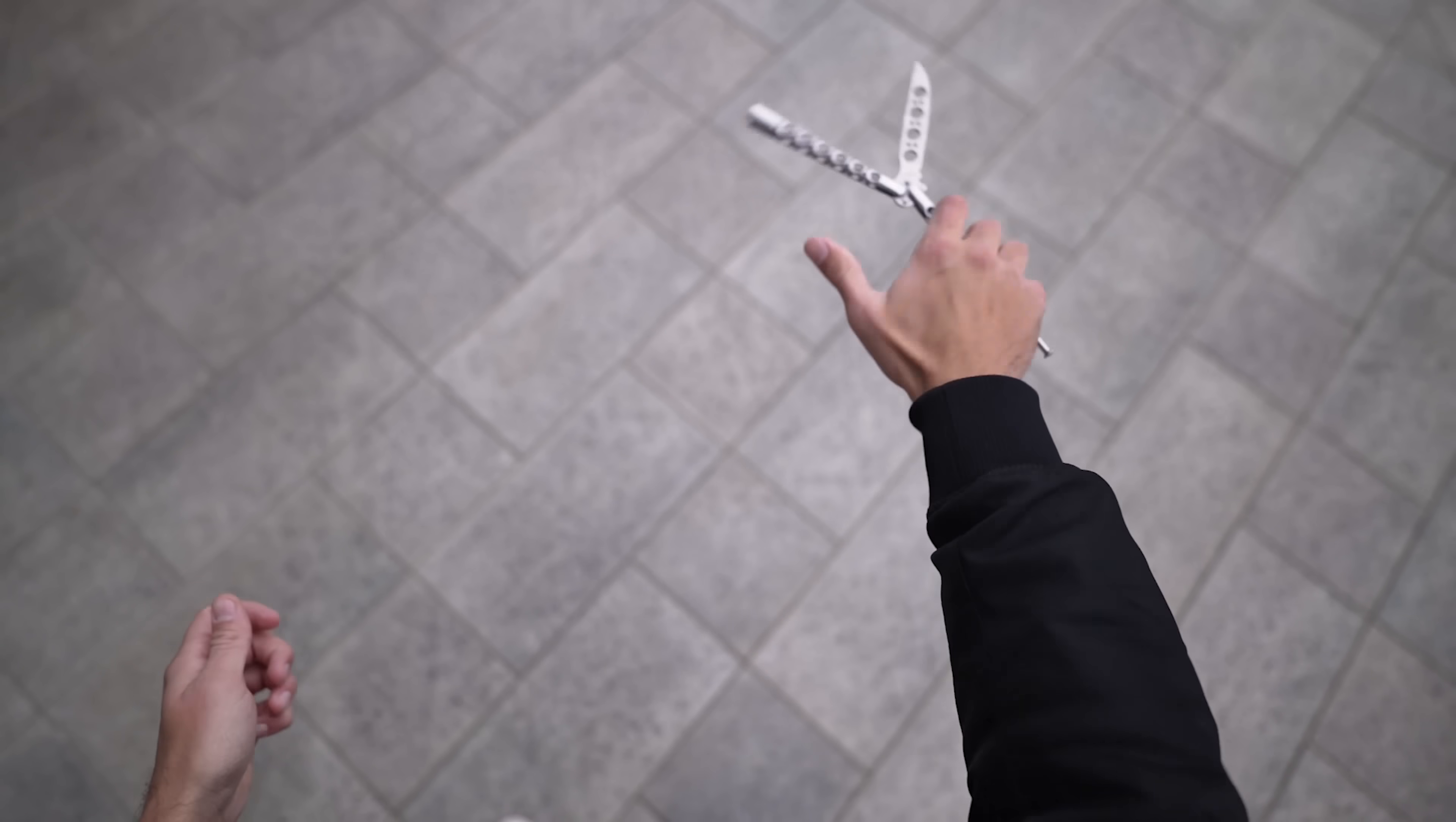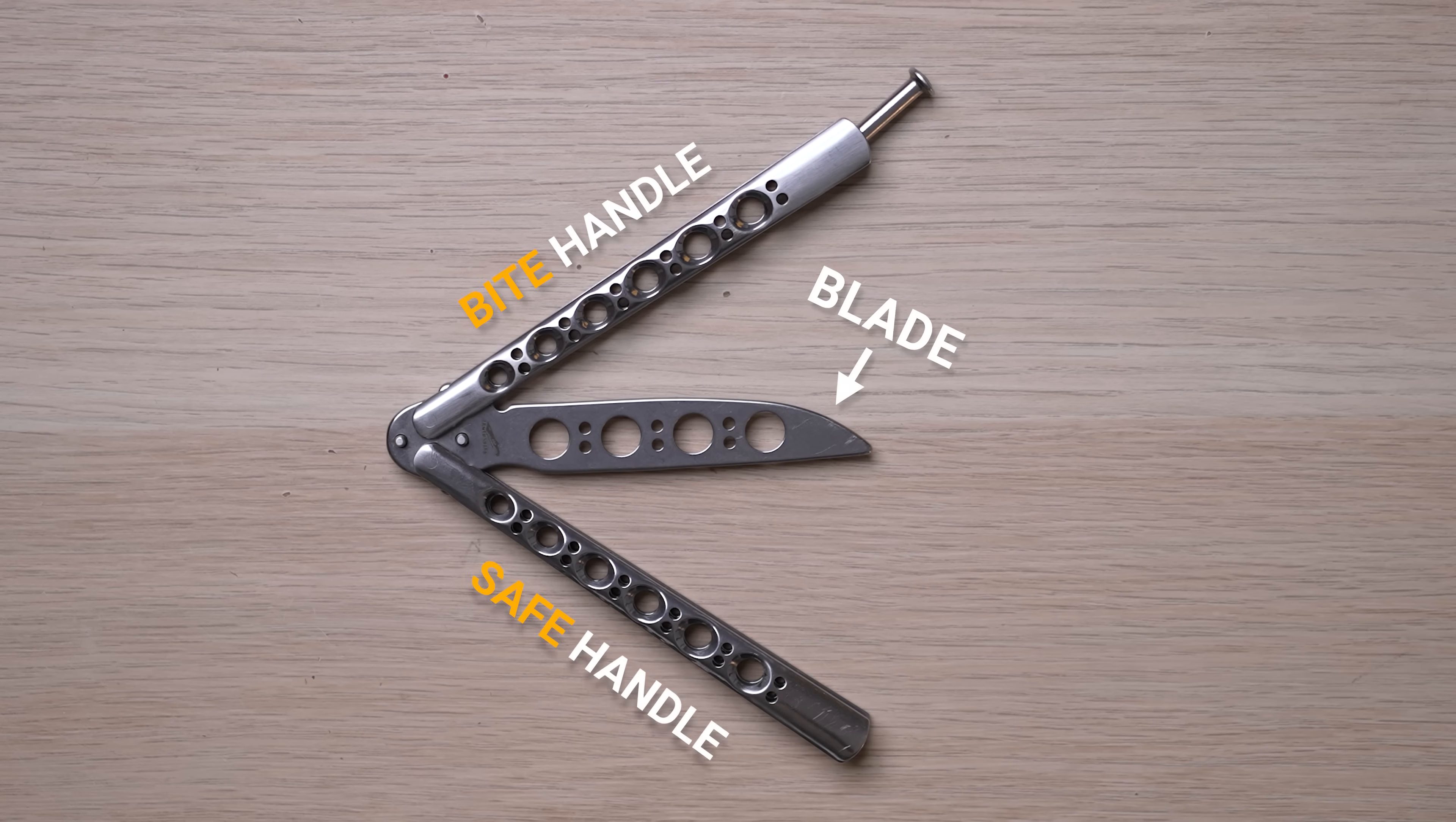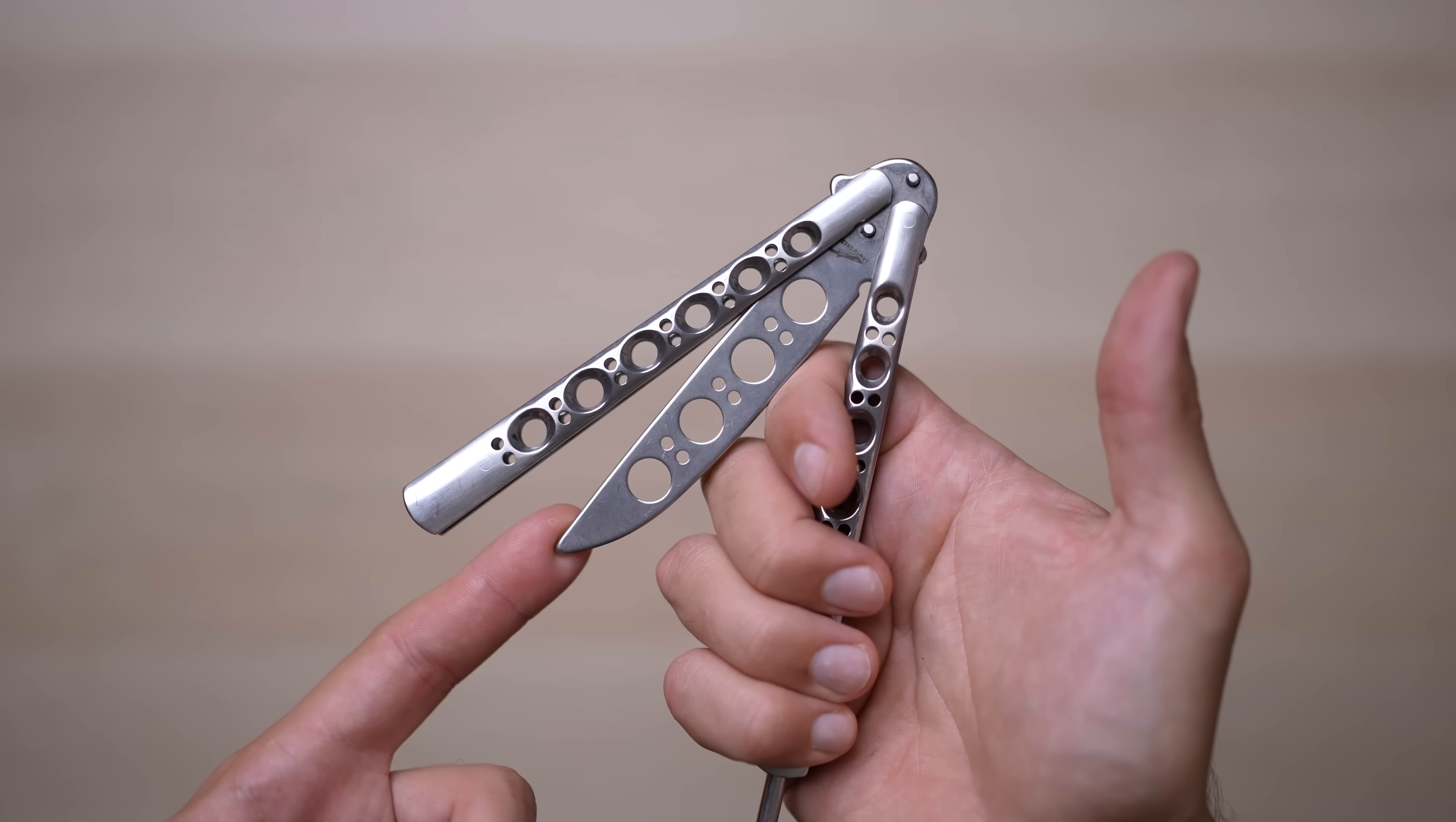This week I wanted to learn 4 balisong tricks, from beginner level to advanced. Every balisong has a safe handle and a bite handle. And even if I'm using a trainer which has no blade because I can't hit my fingers, the goal of every trick is to never get your finger stuck between blade and bite handle.